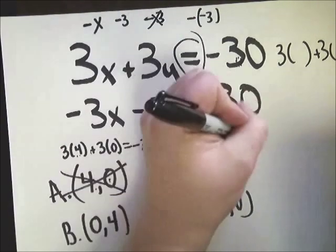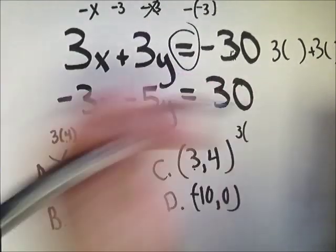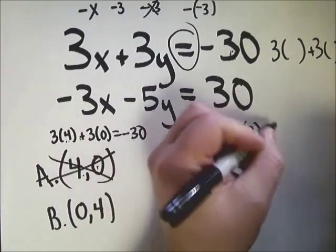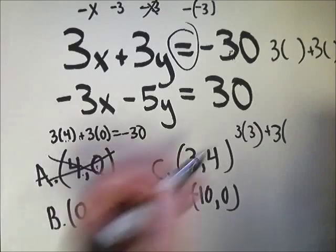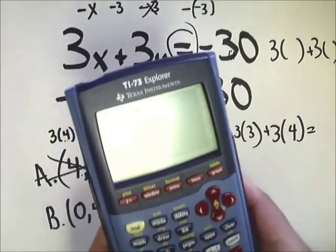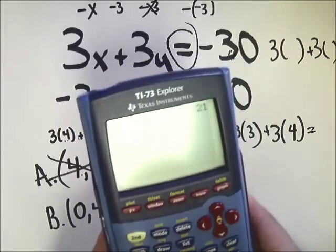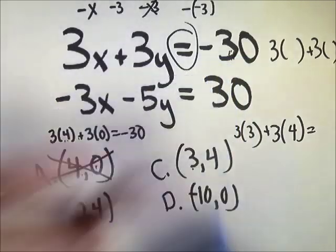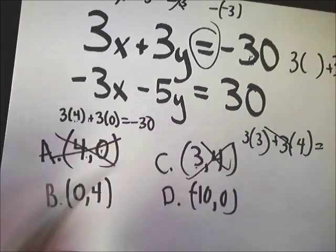Now let's try this one. 3 times 3 plus 3 times 4. So I would do 3 parenthesis 3 plus 3 parenthesis 4 and it gives me 21. That's not what it's supposed to give me, so this one is not the answer.